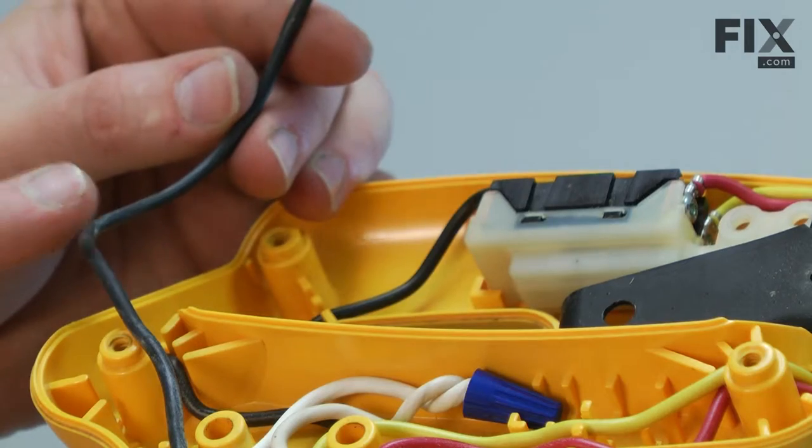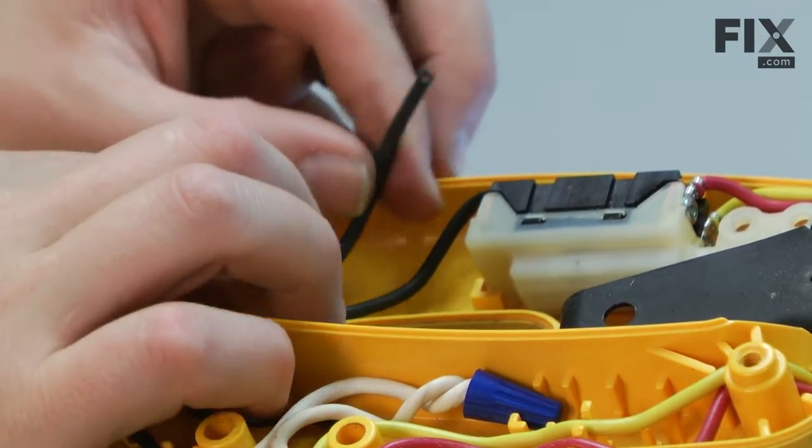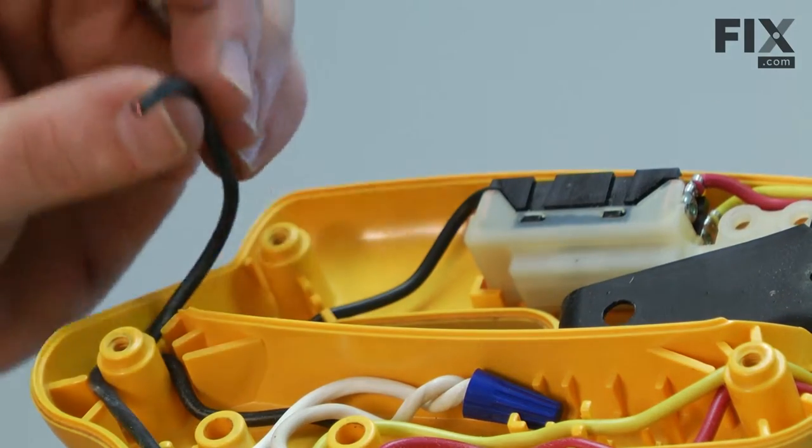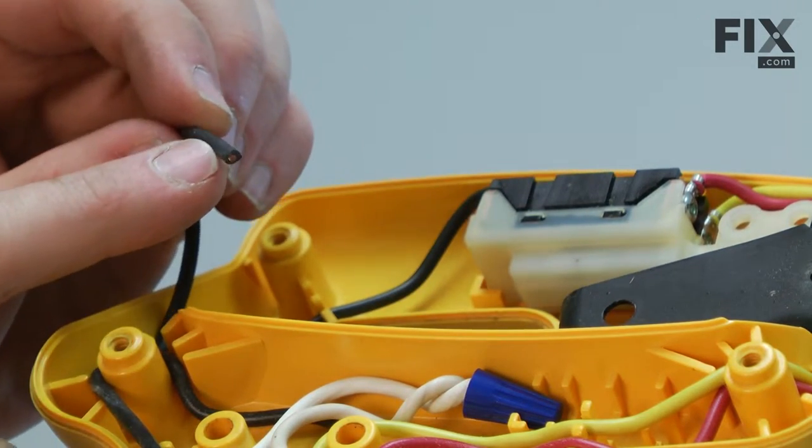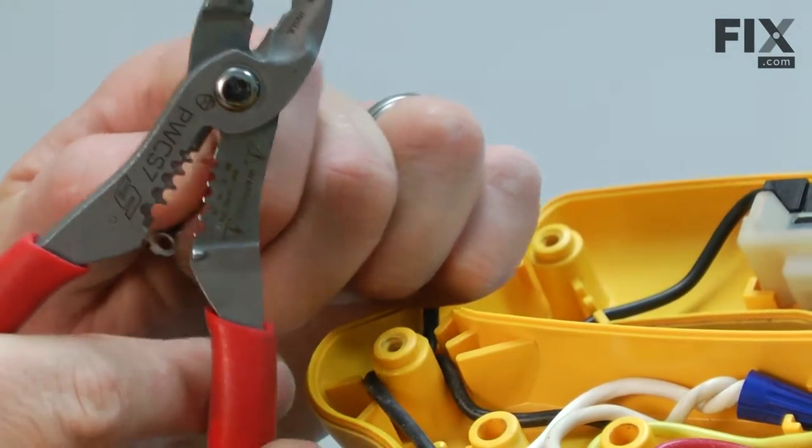Now we'll move on to the black wire. The first thing I want to do is make sure that it is long enough to get to our switch, and it is. Now, I need to put a new terminal on the end of the wire. First, I'll go ahead and strip back some of the insulation.